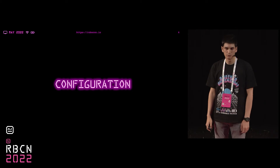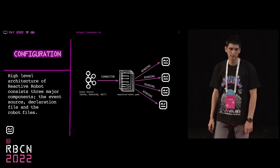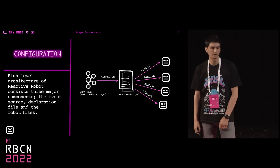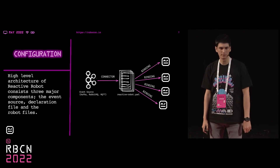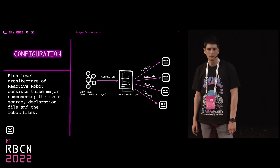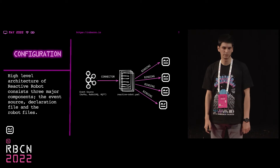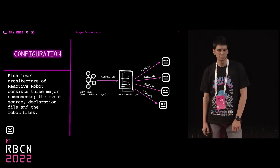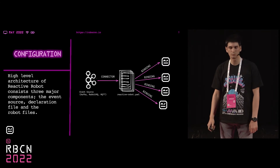The high-level architecture of Reactive Robot consists of three major components: the event source, the configuration files, and robot files. The named arrows on the diagram indicate the name of the object used in the configuration file, which we will look into on further slides. On the next slide, we will look at where the Reactive Robot configuration file stands in your project.